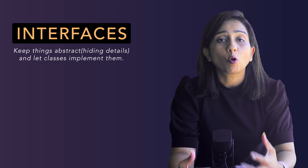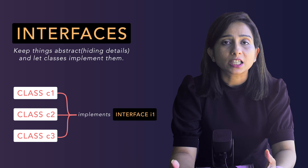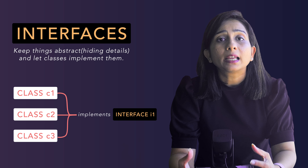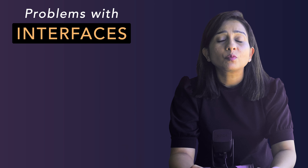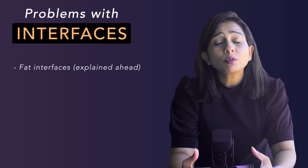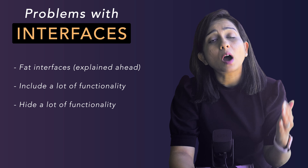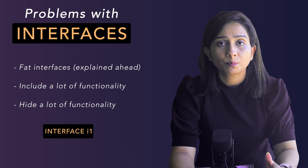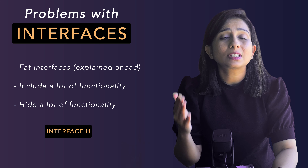In order to implement and utilize the power of abstraction, we use interfaces in object-oriented design. It is possible to hide all the implementation details behind interfaces and just expose those interfaces for other classes to implement or utilize. The problem is that sometimes we end up designing interfaces in such a way that we make them really fat, trying to include a lot of functionality behind one interface.